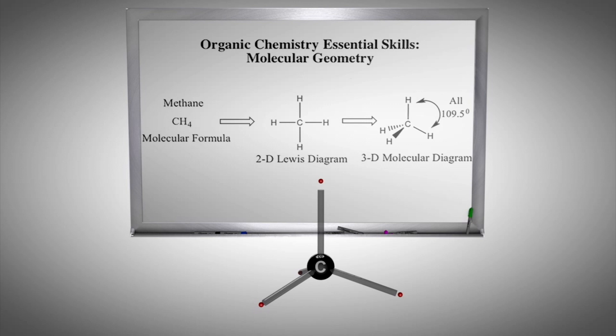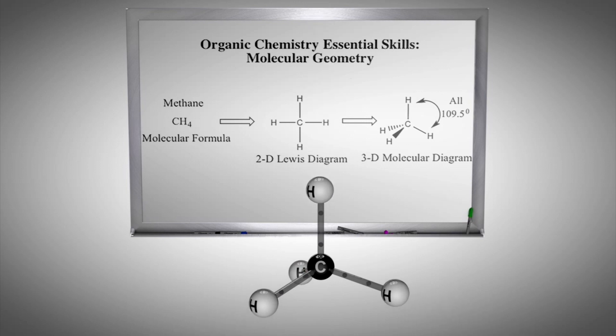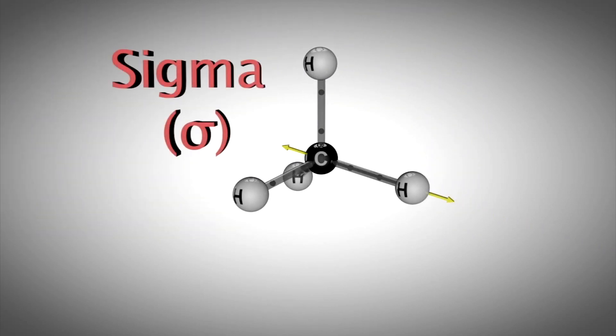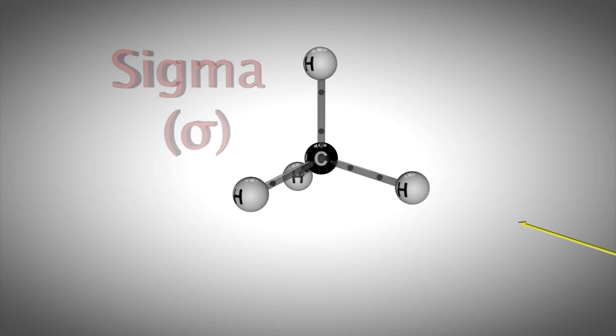Again, the two solid lines in this drawing are in the plane of the board, the wedge represents one of the hydrogen atoms coming out of the plane of the board, and the dashed line represents one of the hydrogen atoms going back behind the plane of the board. The student should be able to mentally build and envision the molecule in three dimensions. The electron density is symmetrically located about an imaginary line that runs between the two adjacent nuclei. We call these four bonds sigma bonds.